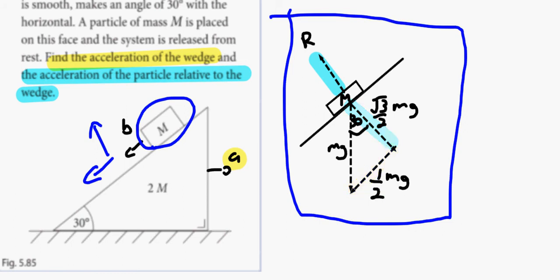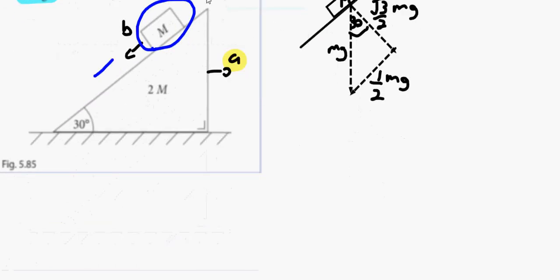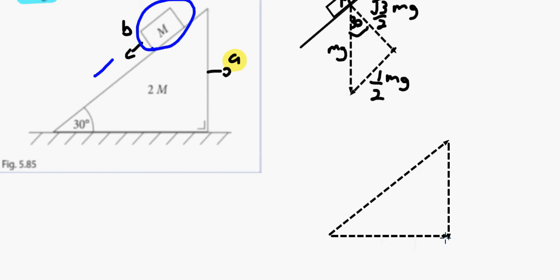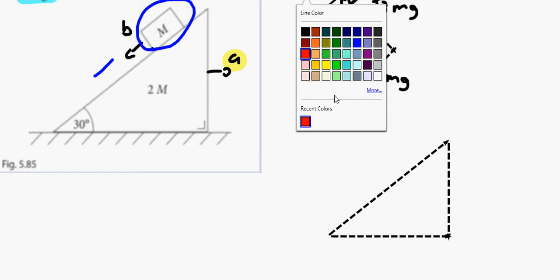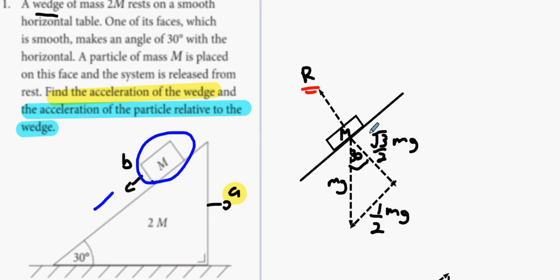That's called the particle diagram. The next thing is called the wedge diagram. From the wedge's point of view, it experiences a reaction force R going in the opposite direction. This R is exactly the same magnitude as the one acting on the particle, just in the opposite direction. Remember, it doesn't equal (√3/2)mg this time — the wedge is giving way, it's moving position, so it's not a balanced force anymore.